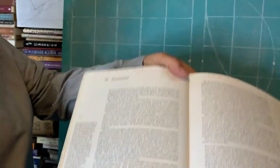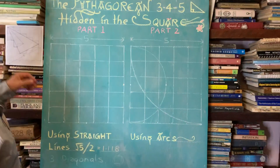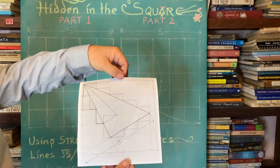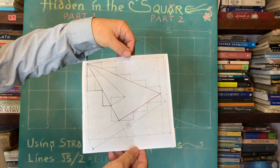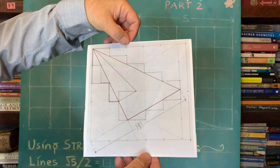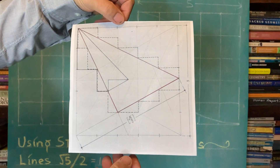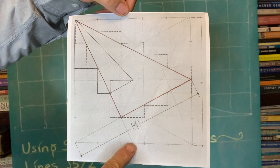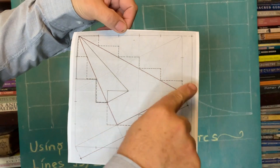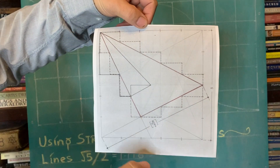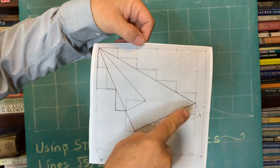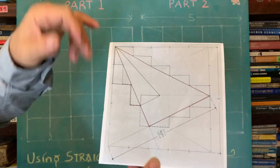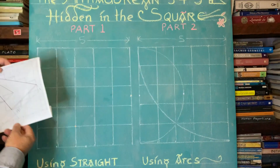We're going to blow this picture up so you can see what we're doing. There's a five-by-five grid, and the secret to this diagram is that with three diagonals we're going to construct the 3-4-5 triangle. We'll look for the midpoint on one side, and you can see there's a critical point where the 90-degree angle appears. Let's go through it step by step.